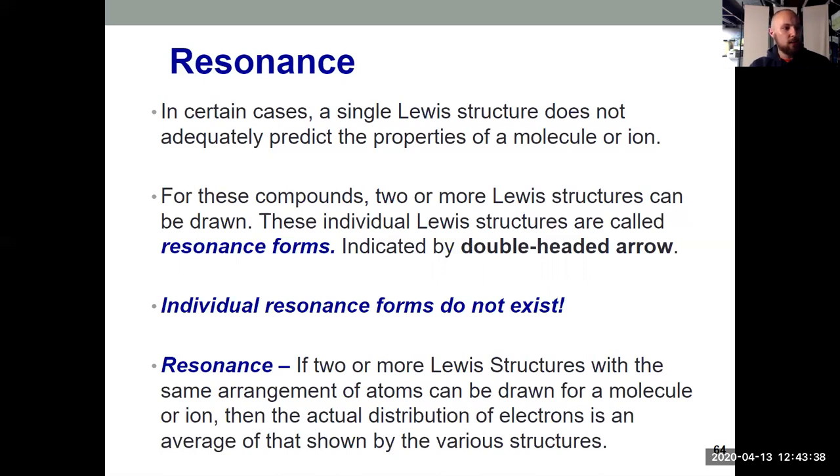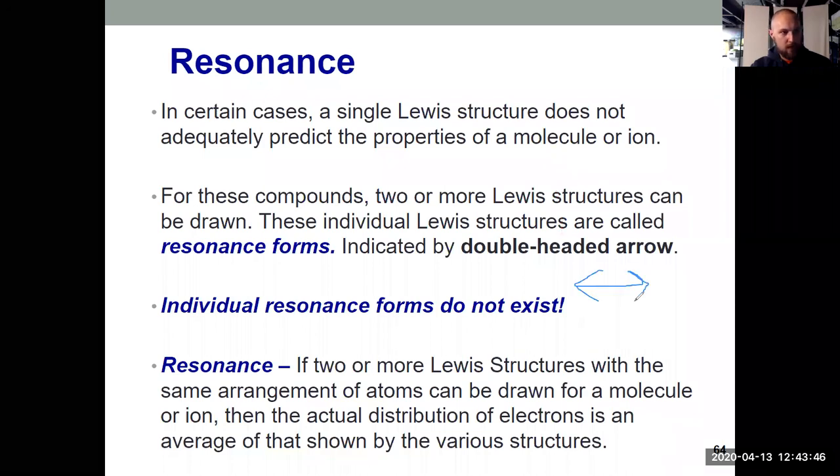And they're indicated by a double headed arrow. So like this arrow with two heads. That's how we separate out different resonance forms. And a key idea is that individual resonance forms don't exist. They're just the best way that we can describe it on paper.